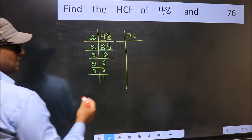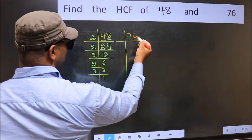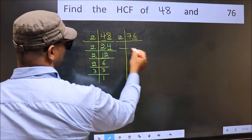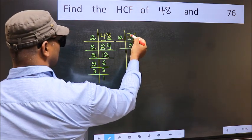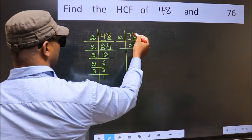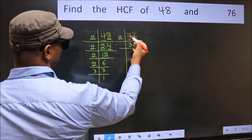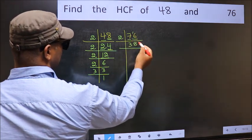Now the other number. Last digit 6, even, so take 2. First number 7, a number close to 7 in 2 table is 2 times 3 is 6. 7 minus 6, 1, 1 carried forward, 16. When do we get 16 in 2 table? 2 times 8 is 16.